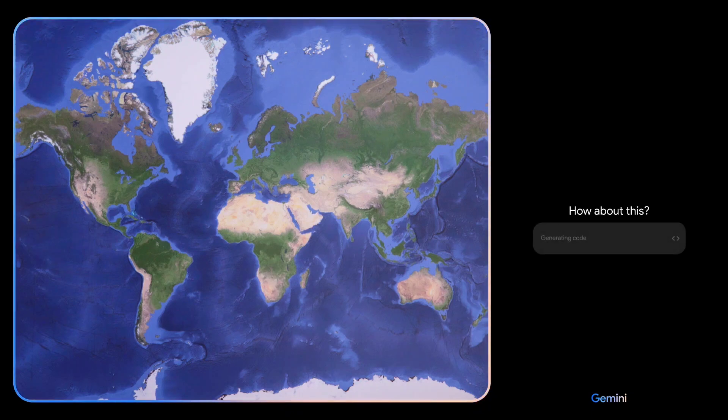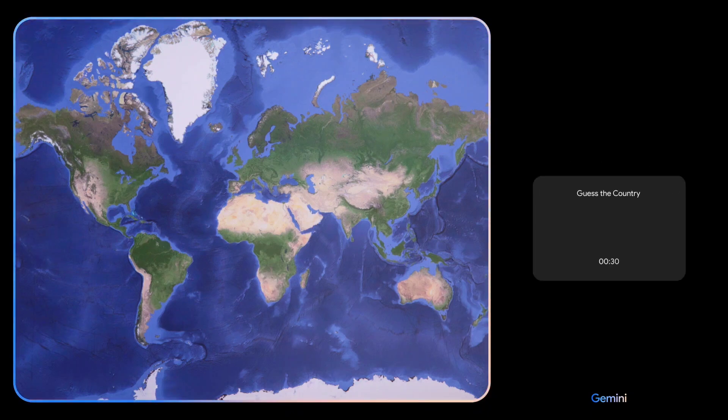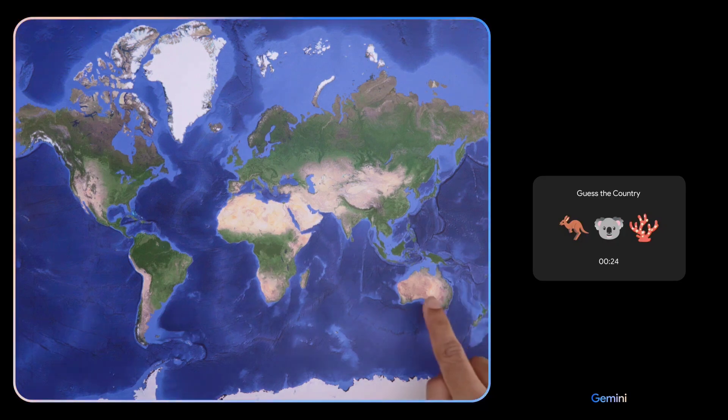How about this? We can play a game called guess the country. Sure, let's do it. Clue 1. This country is the home of the kangaroo, the koala, and the great barrier reef. Oh, that's easy.